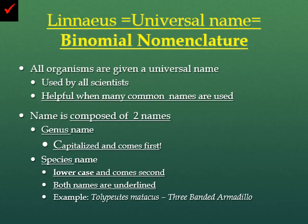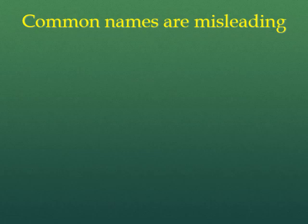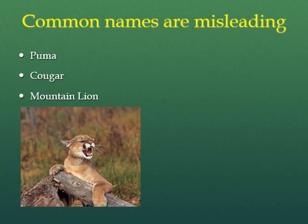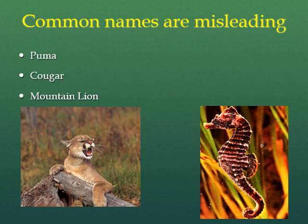For example, Tolypeutes matacus — genus being Tolypeutes and species being matacus — is the scientific name for the three-banded armadillo. Common names can be incredibly misleading depending on where you live. For example, this creature right here could be referred to as a puma, a cougar, or even a mountain lion depending on which area you live in. Also, we know that this is a seahorse, but it's not a horse, it's a fish. Depending on the common name, it can be a tad bit misleading to what the organism actually is, whereas the genus and species will give you the exact specific name of the organism.